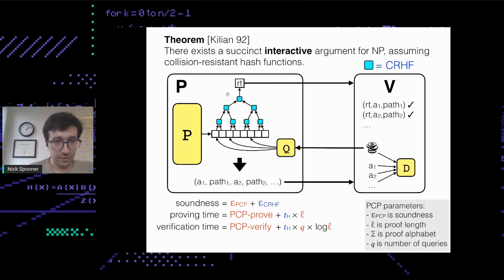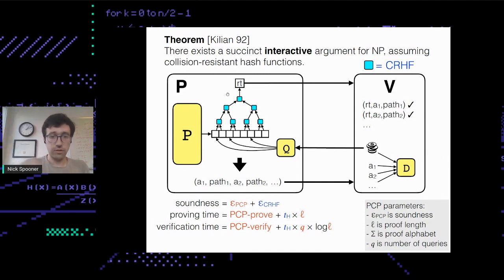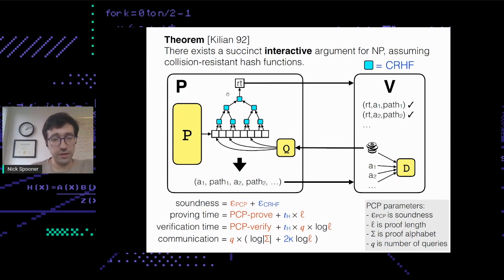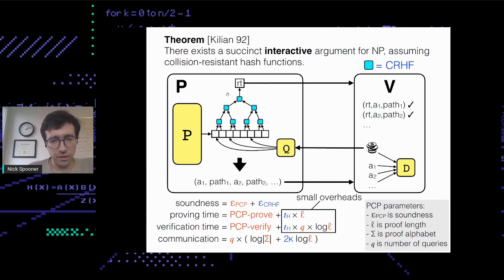Verification cost is the cost of the original PCP verifier plus the cost of checking all authentication paths. For a Merkle tree, you apply the hash function Q times log L times — so you have Q authentication paths each of length log L, giving total cost T·Q·log L. Communication is the number of queries multiplied by the symbol size, plus the size of all authentication paths, which is about kappa·log L where kappa is the security parameter — the output size of the hash function. For reasonable PCP parameters, these are a small overhead, since the PCP proving time is at least L.